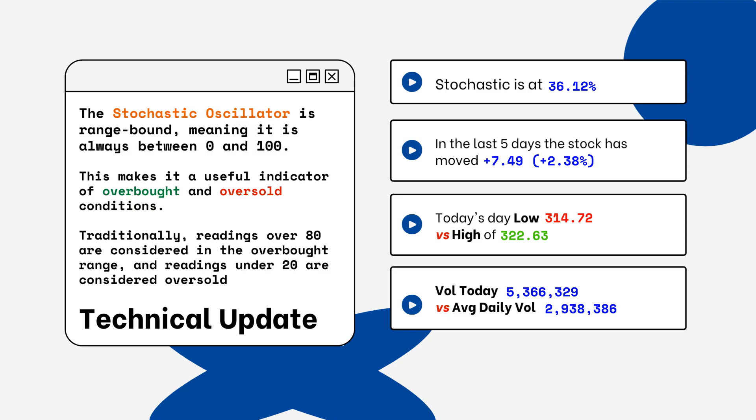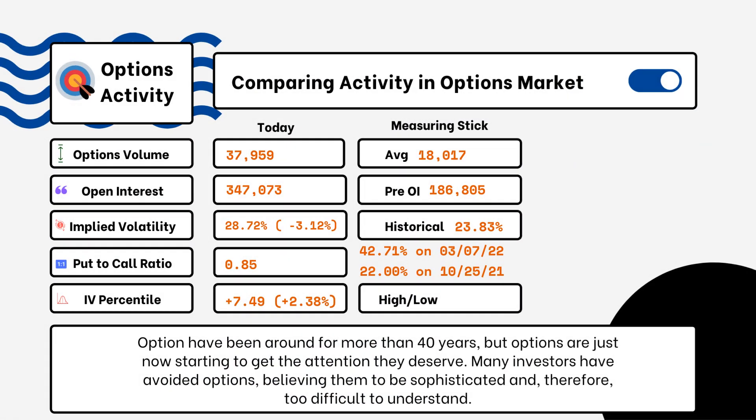We've provided details on today's option activity. What you'll be able to see here is options volume, open interest, implied volatility, put-to-call ratio, and IV percentile. One of the most popular indicators for traders is the put-to-call ratio. When we're looking at put-to-call ratios, if we see anything above one, that is telling us that there is more bearish sentiment in the market.